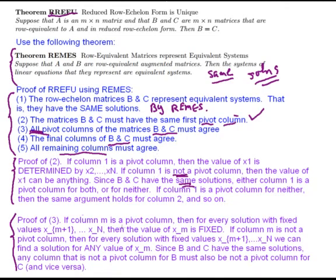If column M is a pivot column, then once the variables with larger index are determined, the value of x_M is fixed. On the other hand, if column M is not a pivot column, then for any solution with fixed values of the larger-indexed variables, we can find a solution for any value of x_M because there's no equation that uniquely determines x_M. Since B and C have the same solutions, any column that's not a pivot column for B must also not be a pivot column for C and vice versa. This tells us that all pivot columns of matrices B and C must agree.